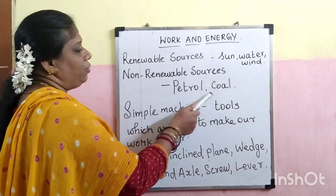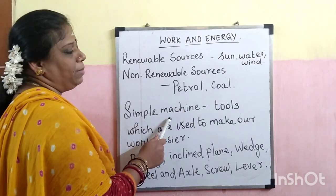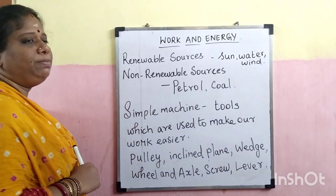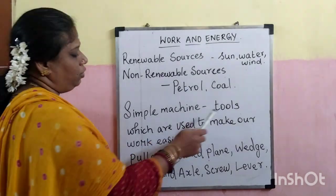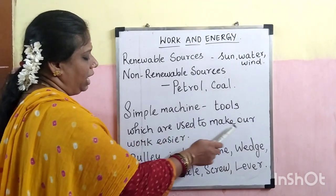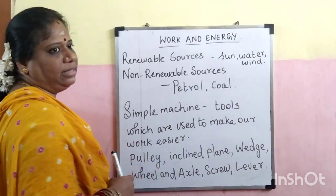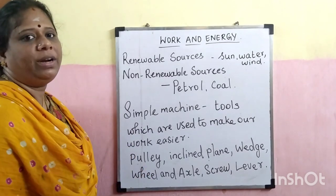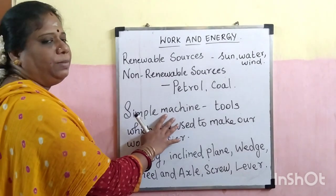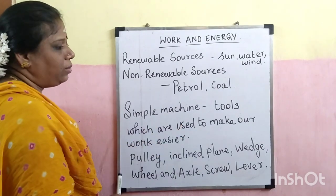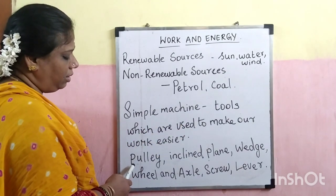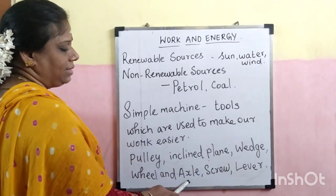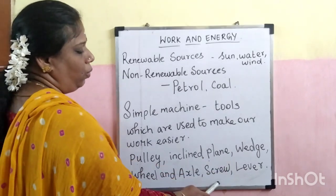Simple machines are tools which are used to make our work easier. Some simple machines are pulley, inclined plane, wedge, wheel and axle, screw, and lever.